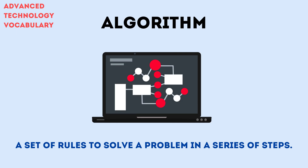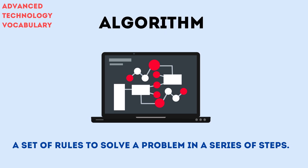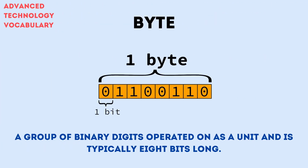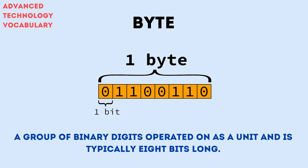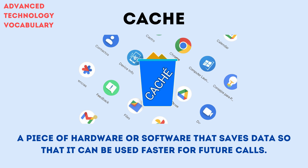An algorithm is a set of rules to solve a problem in a series of steps. A byte is a group of binary digits operated on as a unit and is typically 8 bits long. Cache is a piece of hardware or software that saves data so that it can be used faster for future calls.